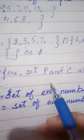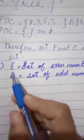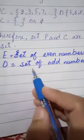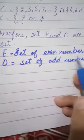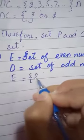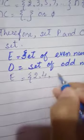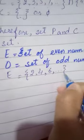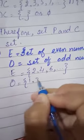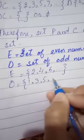P and C are disjoint sets because they have no common element. Next, part (iv): E is equal to set of even numbers, and O is equal to set of odd numbers.